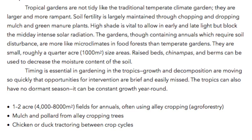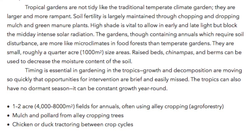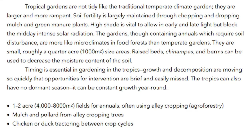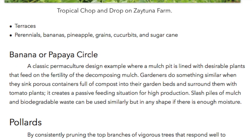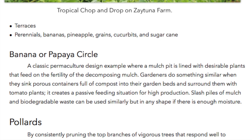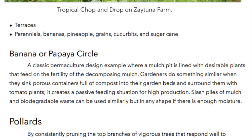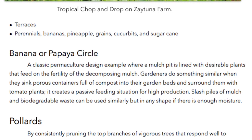Mulch and pollard from alley cropping trees. Chicken or duck tractoring between crop cycles. Terraces for perennials: bananas, pineapple, grains, cucurbits, and sugar cane.